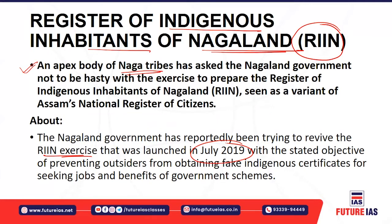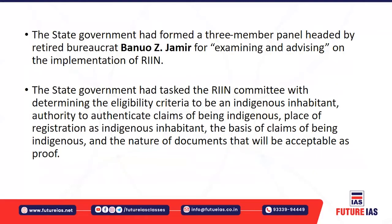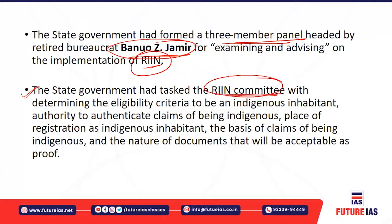Nagaland is a mountainous state in northeastern India. It is bordered by Arunachal Pradesh to the north, Assam to the west, Manipur to the south, and Myanmar — specifically the Sagaing region — to the east. The capital city is Kohima and the largest city is Dimapur. The state government has formed a three-member panel headed by a bureaucrat to examine and advise on the implementation of RIIN.